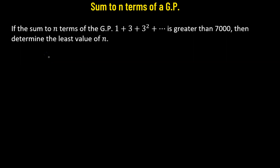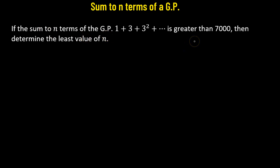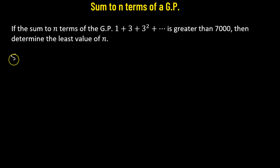We have a geometric progression: 1, 3, 3 squared, and so on. It is given that the sum to n terms of this geometric progression is greater than 7000. Using this information, we need to obtain the least value of n. So let's begin.